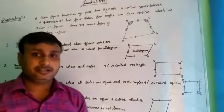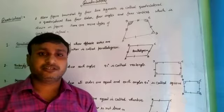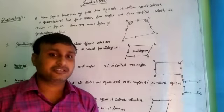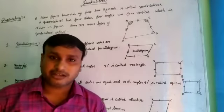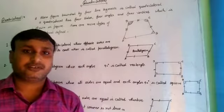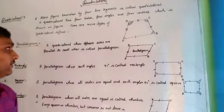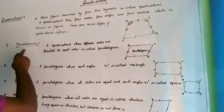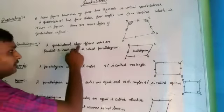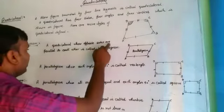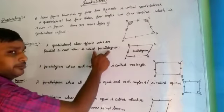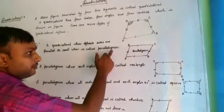A quadrilateral has 4 vertices, 4 angles, and 4 sides. There are more types of quadrilateral. The first type is parallelogram. A quadrilateral whose opposite sides are parallel to each other is called a parallelogram.